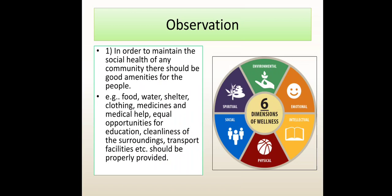These are some observations of the given activity. First, in order to maintain the social health of any community, there should be good amenities for the people — for example, food, water, shelter, clothing, medicine and medical health. Equal opportunities for education, cleanliness of the surroundings, transport facilities, etc., should be properly provided.